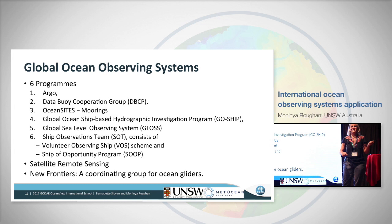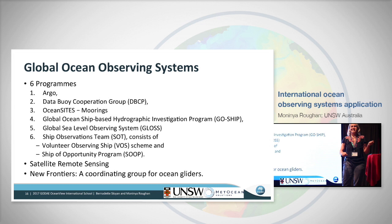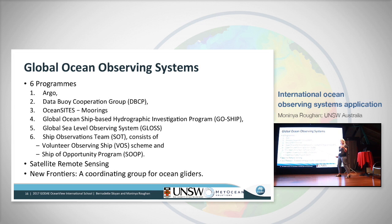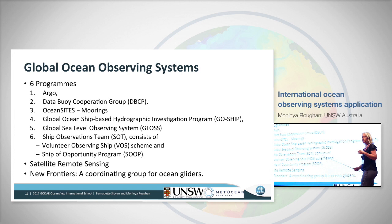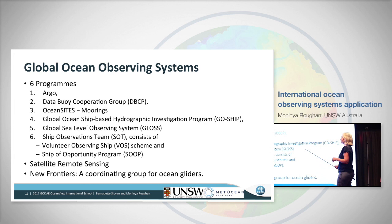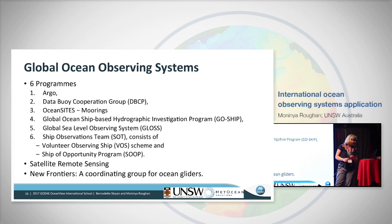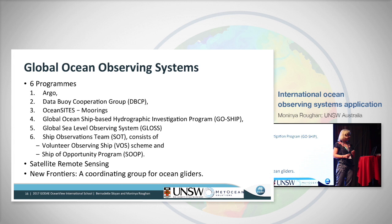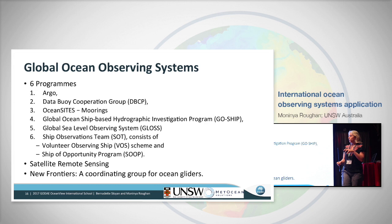Now we need to know how we're going to measure these essential ocean variables. The six core programs under the GOOSE framework are: the Argo program, the Data Buoy Cooperation Group, OceanSITES (moorings), the GOSHip program (Global Ocean Ship-Based Hydrographic Investigation Program), the Global Sea Level Observing System (GLOSS), and the Ship Observations Team — consisting of the Voluntary Ocean Ship Scheme and Ships of Opportunity. And of course, Satellite Remote Sensing, which is not under GOOSE but is a very significant component.